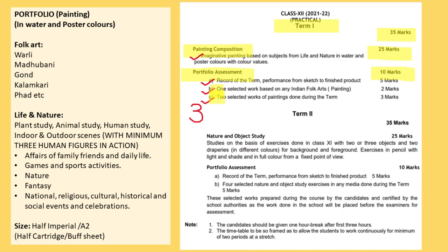In life and nature, what we need to do is plant study, animal study, human study — any outdoor or indoor activities of people with minimum 3 human figures in action. CBSE says the compositions can be made on affairs of family, friends and daily life, games and sports activities, nature, fantasy — which means now you can make abstracts also — national, religious, cultural, historical and social events and celebrations.